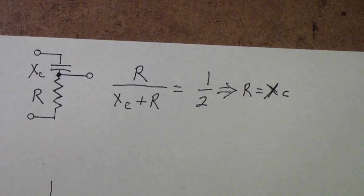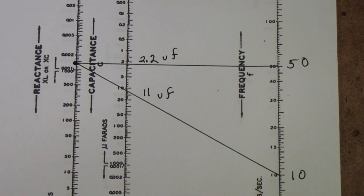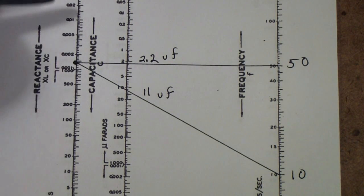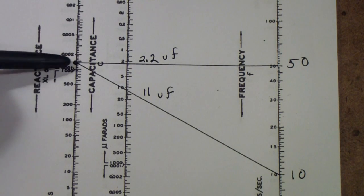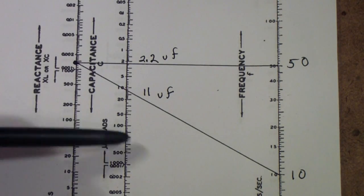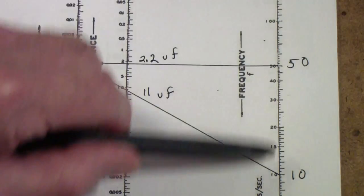This is a reactance chart. What it shows is this axis shows the reactance and we want about 1.5k. This line or graph shows capacitance. And then over here is the frequency.